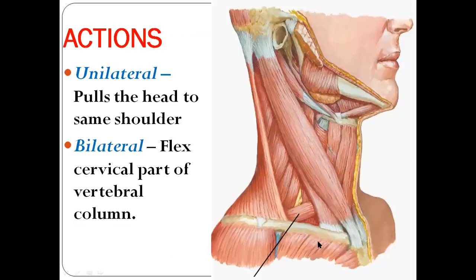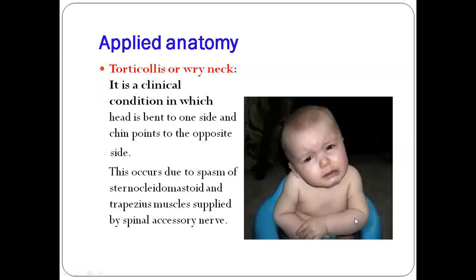Action of sternocleidomastoid: when acting as a single muscle, it pulls the head to the same side of the shoulder. When both right and left sternocleidomastoids contract together, they flex the cervical part of the vertebral column.